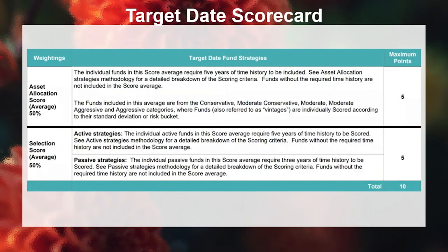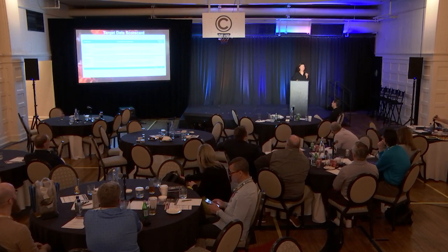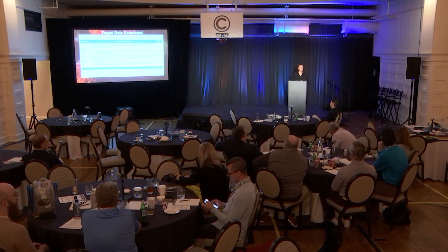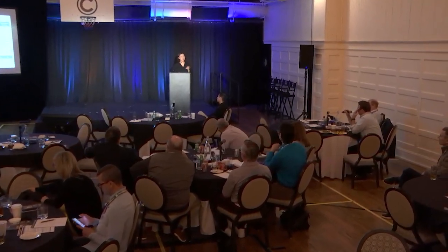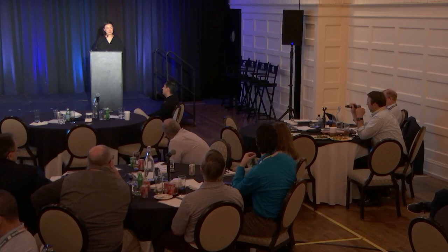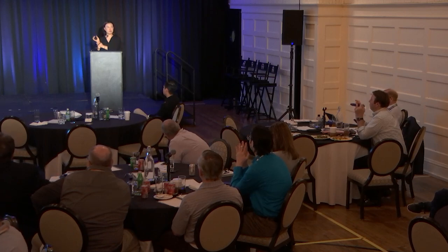I wanted to stop and see if there were any questions before moving to the second portion of this presentation. One question asked when the composite score started reflecting in the system — it was released in 2013 following the DOL guidance. Another question clarified that when you pull a scorecard for a target date fund, it will show you the asset allocation score and the selection score side by side, so you can see how they are calculated into the blended score.